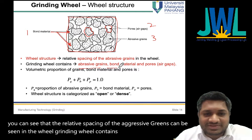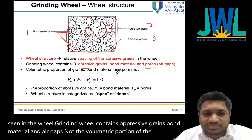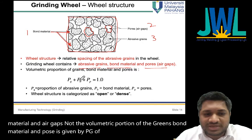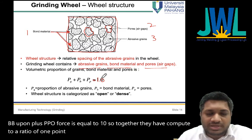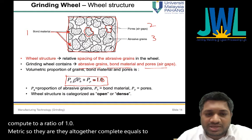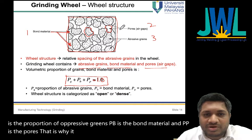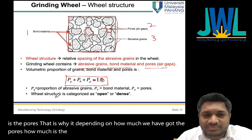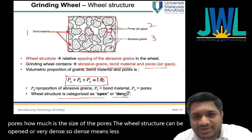The grinding wheel contains abrasive grains, bond material, and air gaps. The volumetric proportions are given by: Pg (grain) + Pb (bond) + Pp (pores) = 1.0, meaning together they complete to 100%. Depending on the amount and size of pores, the wheel structure can be open — more air gaps — or dense — fewer air gaps.